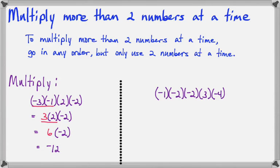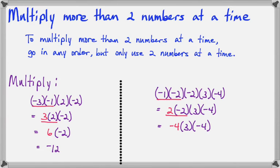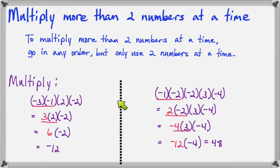Here's another one: negative one times negative two times negative two times positive three times negative four. Negative one times negative two is positive two, positive two times negative two is negative four, negative four times positive three is negative 12, and negative 12 times negative four is positive 48. Since every pair of negative signs makes a positive answer, it's whether they can all be paired up or not. In the first example, two pair together but one is left over — it's odd, giving a negative answer. In this example, all four negatives pair up, and the answer is positive.